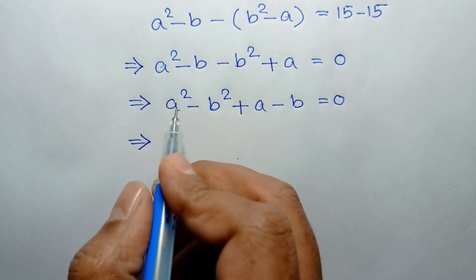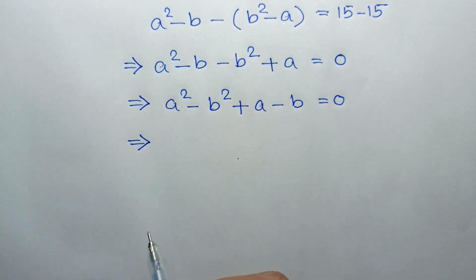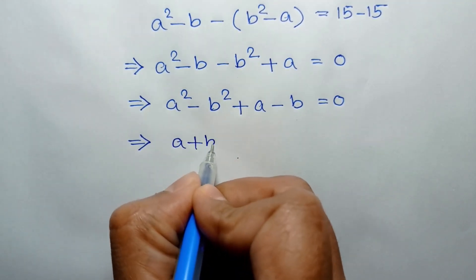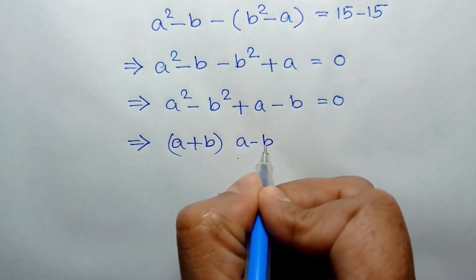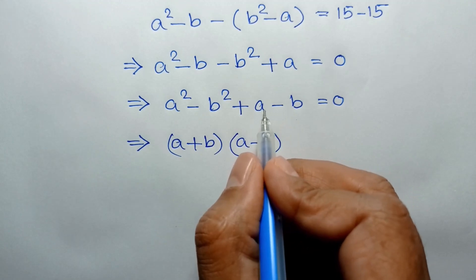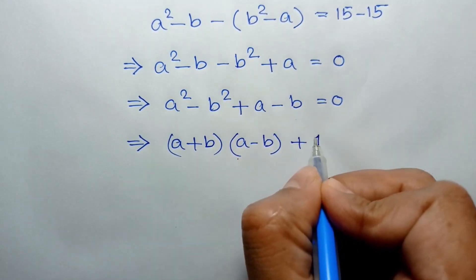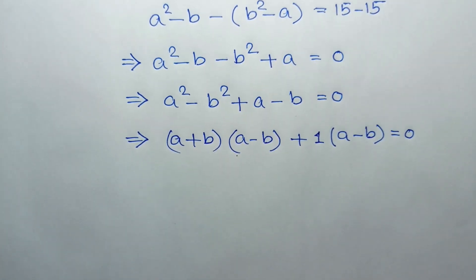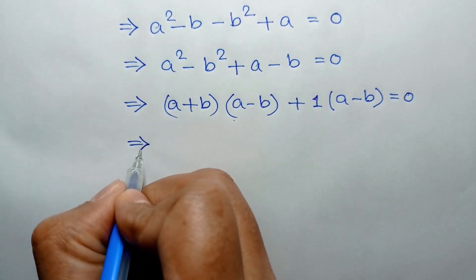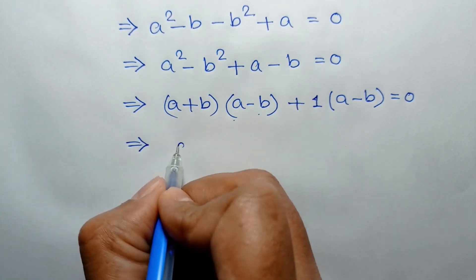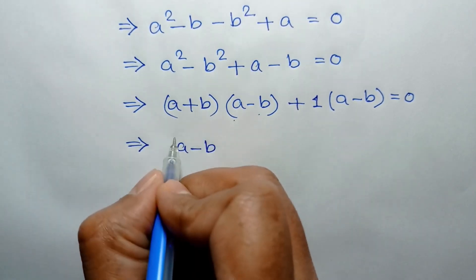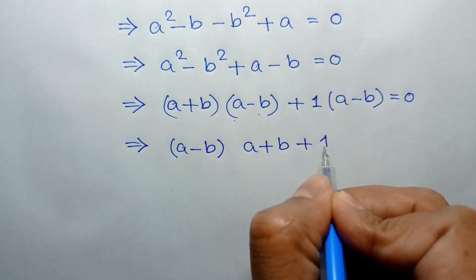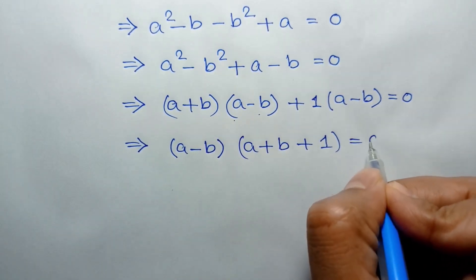Applying the formula A squared minus B squared equals (A plus B)(A minus B), we can write (A plus B)(A minus B). Taking common from the last two terms, we can write 1 times (A minus B) is equal to 0. Taking (A minus B) common, we will have (A minus B) times (A plus B plus 1) is equal to 0.